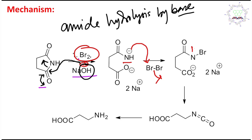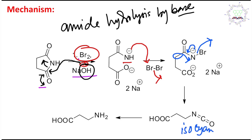The N-H proton is then abstracted by sodium hydroxide, producing N⁻ again. In the next step, the alkyl group migrates, bromine leaves, and the nitrogen negative charge shifts — this is a rearrangement reaction. The product formed is an isocyanate.